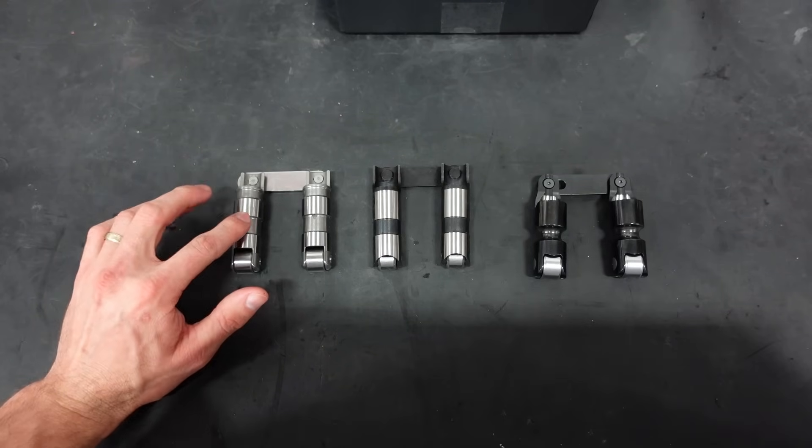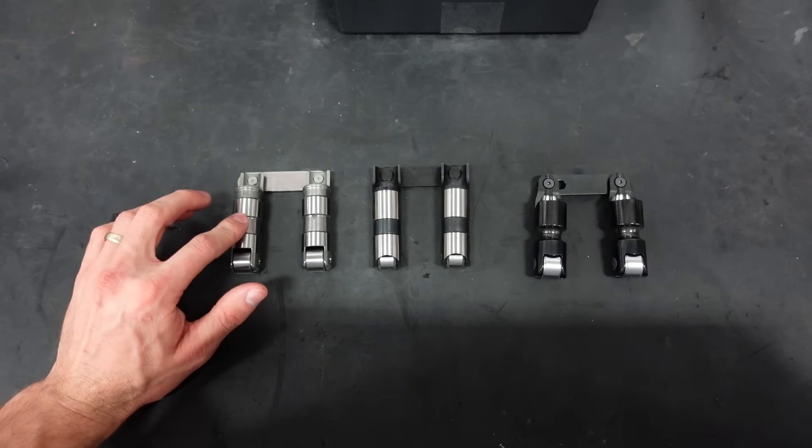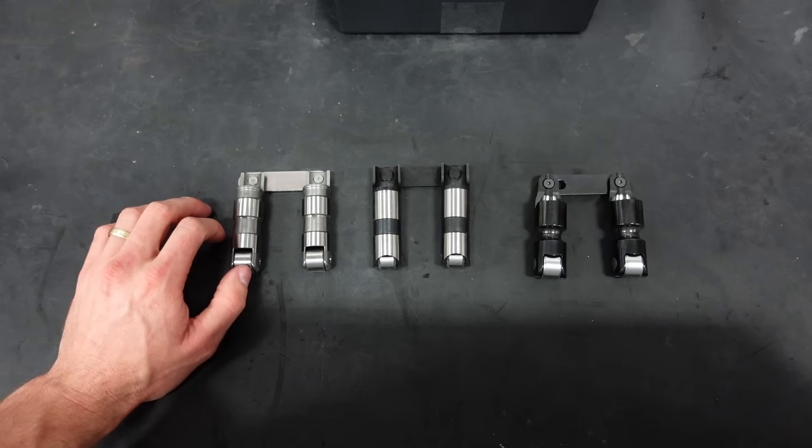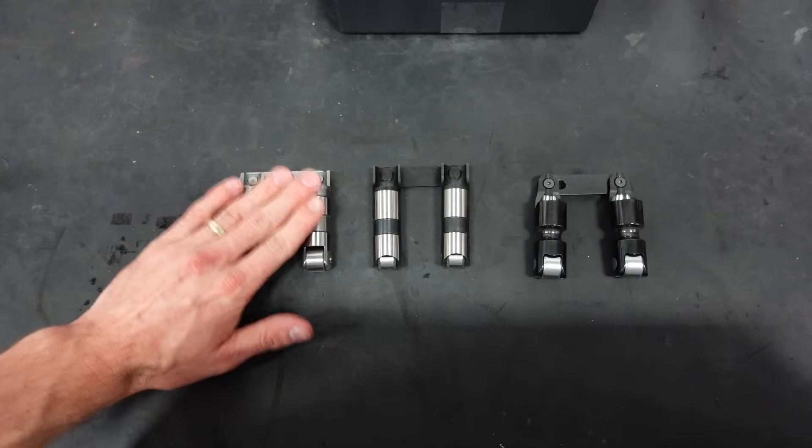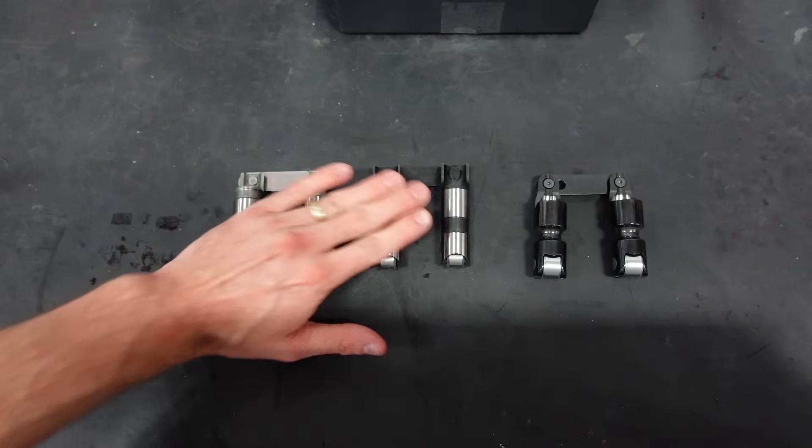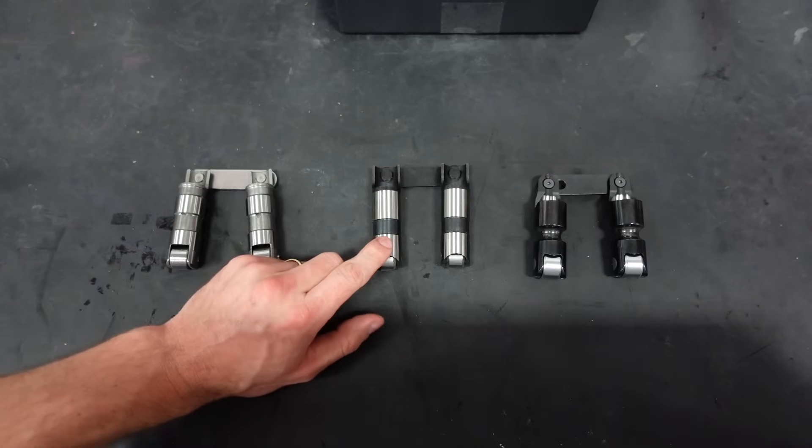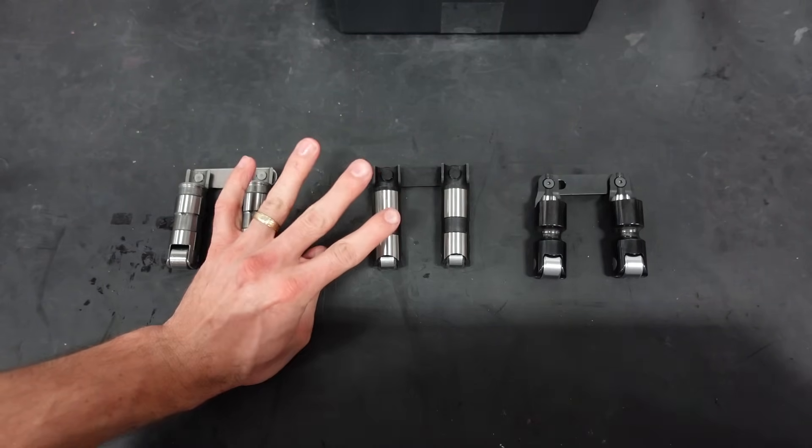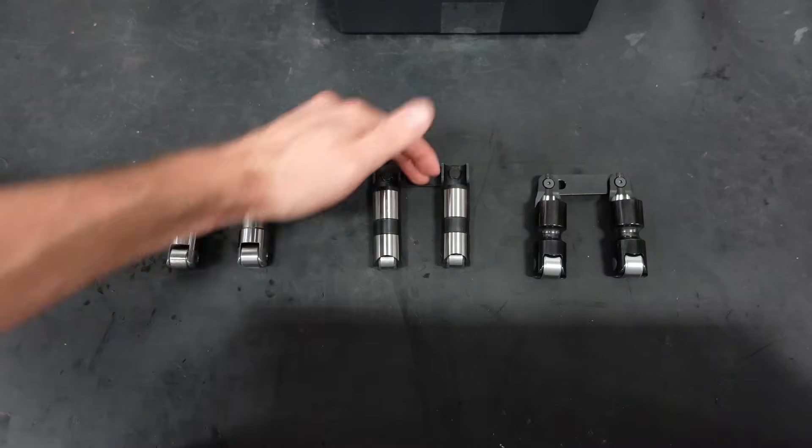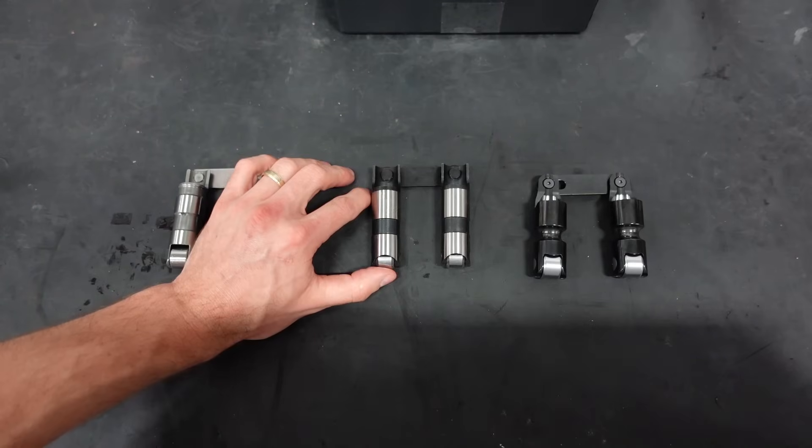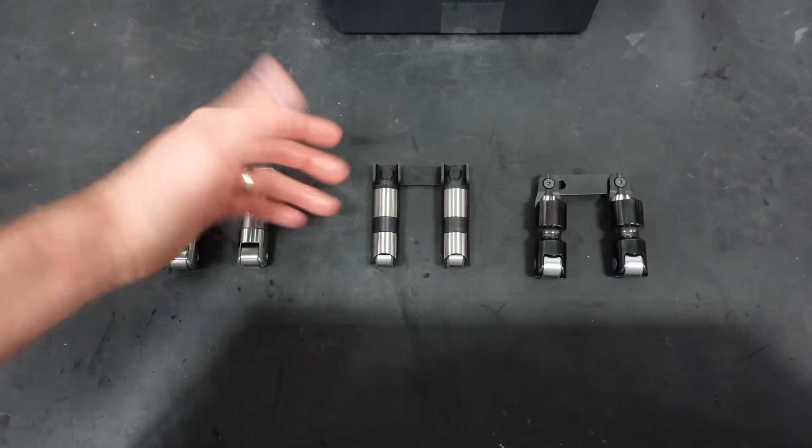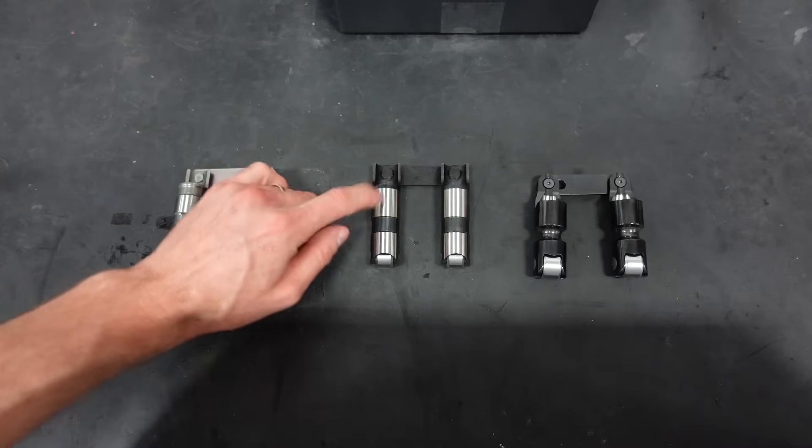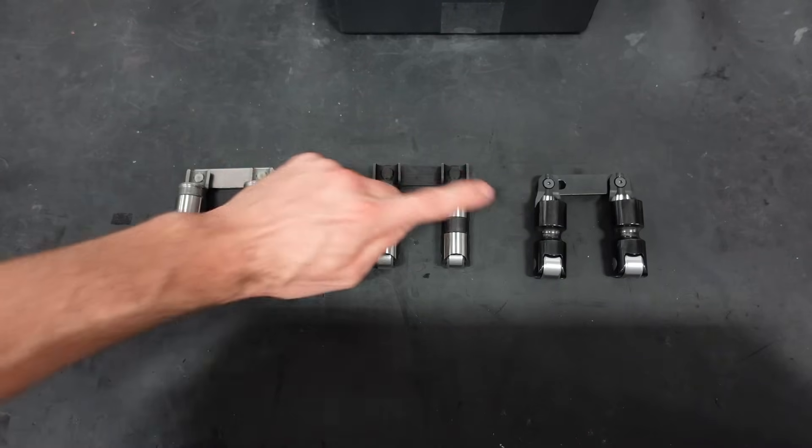Once you start getting into the 75, 7,600 RPM territory, or maybe you're running a valve spring that has mid to high, maybe 500 pounds of spring pressure on the nose, then I might start upgrading. We might go into our next step. And that's going to be these Johnson lifters. In the Johnson family, we carry four of their different lifters that are available on our website. They're all the link bar versions. The standard ones are their basic Johnson link bar. They don't have axle oiling, and they have a standard depth plunger travel.